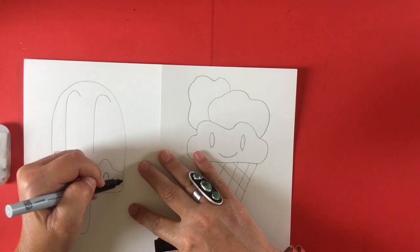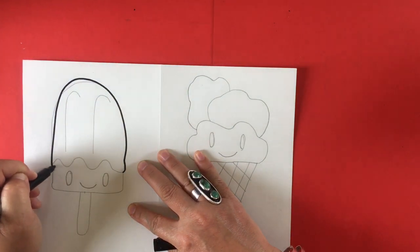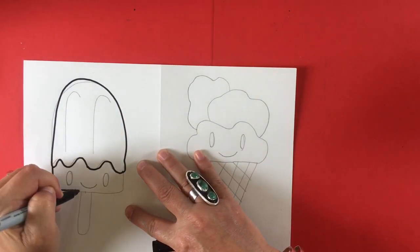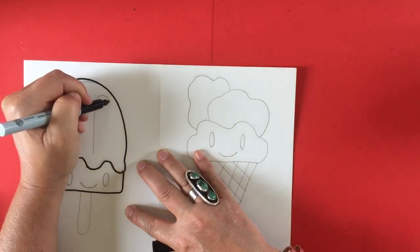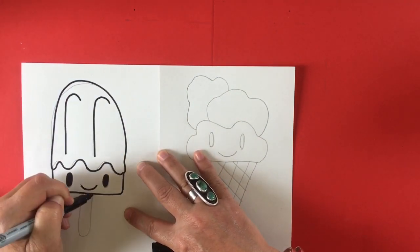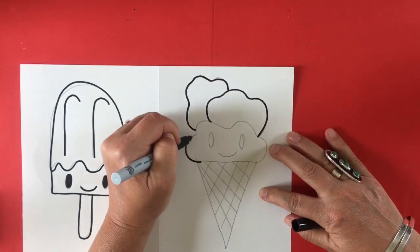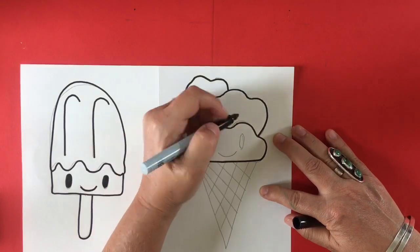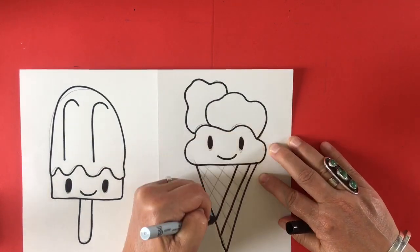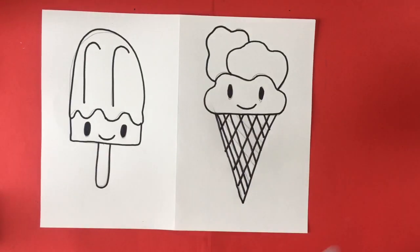Now we're going to get our black sharpie felt tip pen. I'm going to trace all of those pencil lines that I had made and give my popsicle and my ice cream cones some nice sharp edges. I'm going to make sure I trace all the edges.